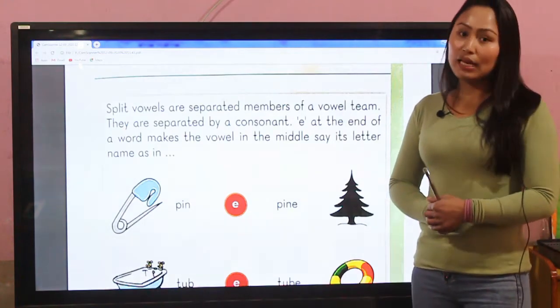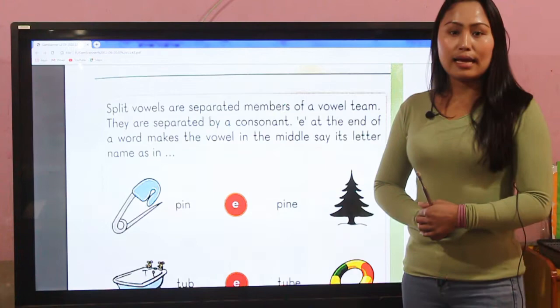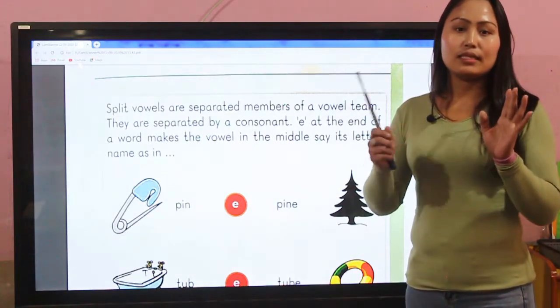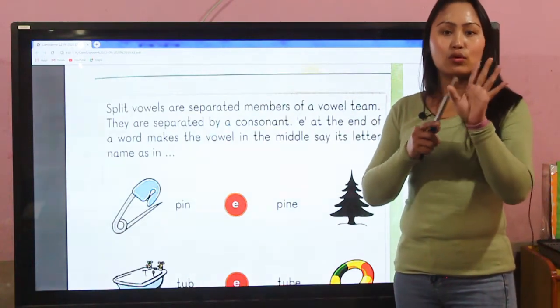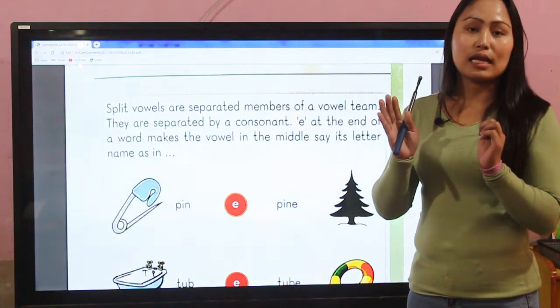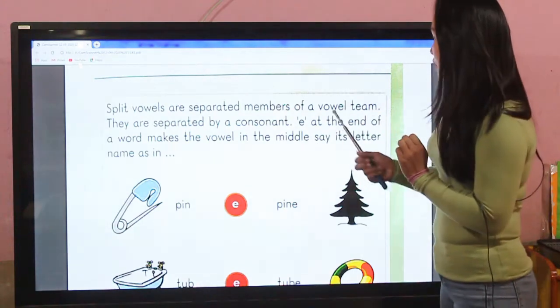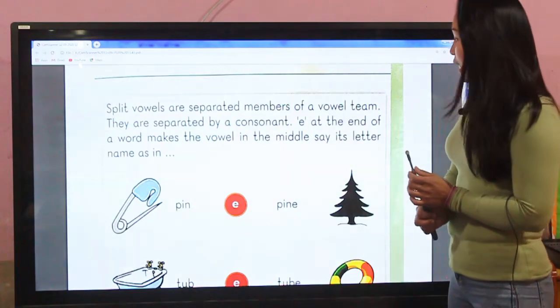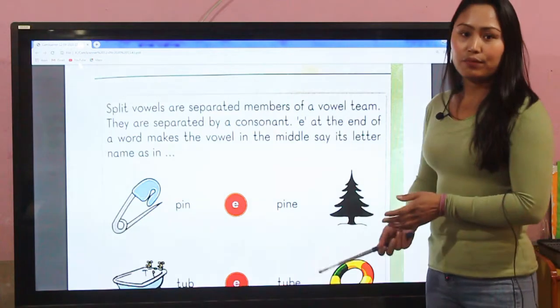Let me revise the vowel and consonant letters. Consonant letters are all letters except a, e, i, o, u. E at the end of a word makes the vowel in the middle say its letter name.